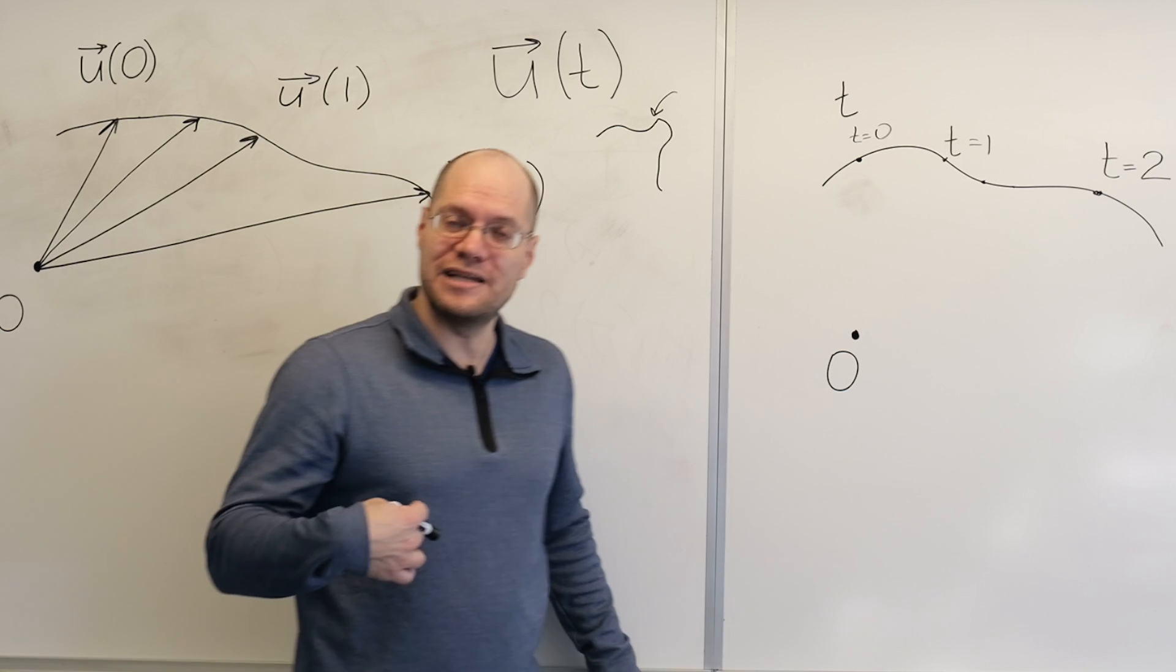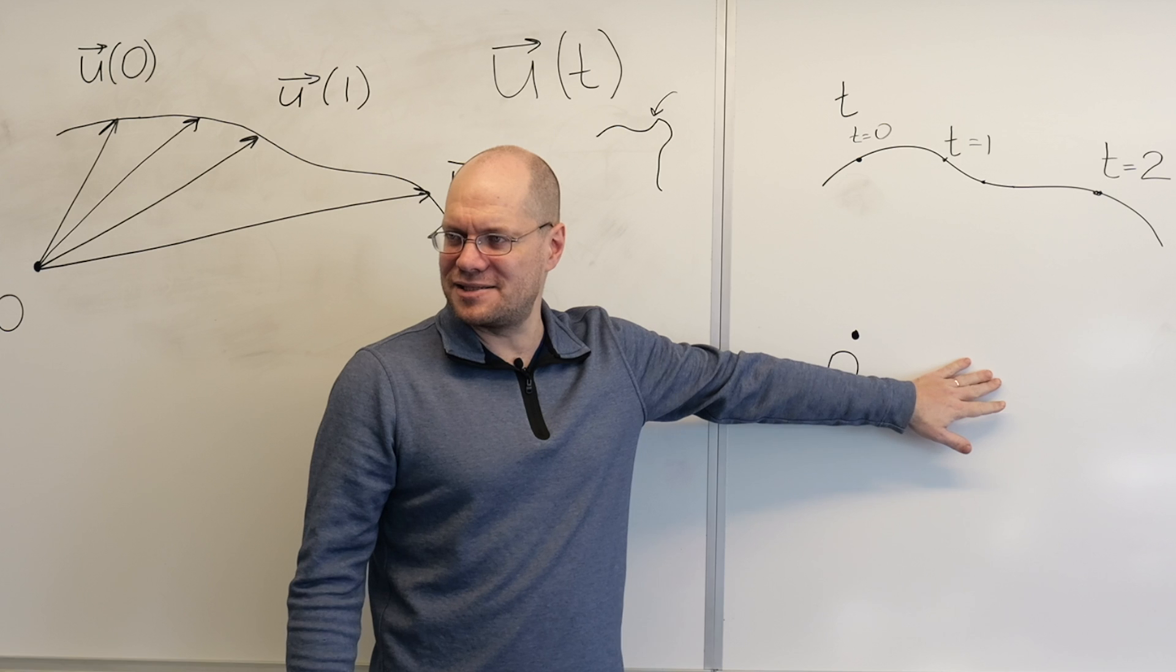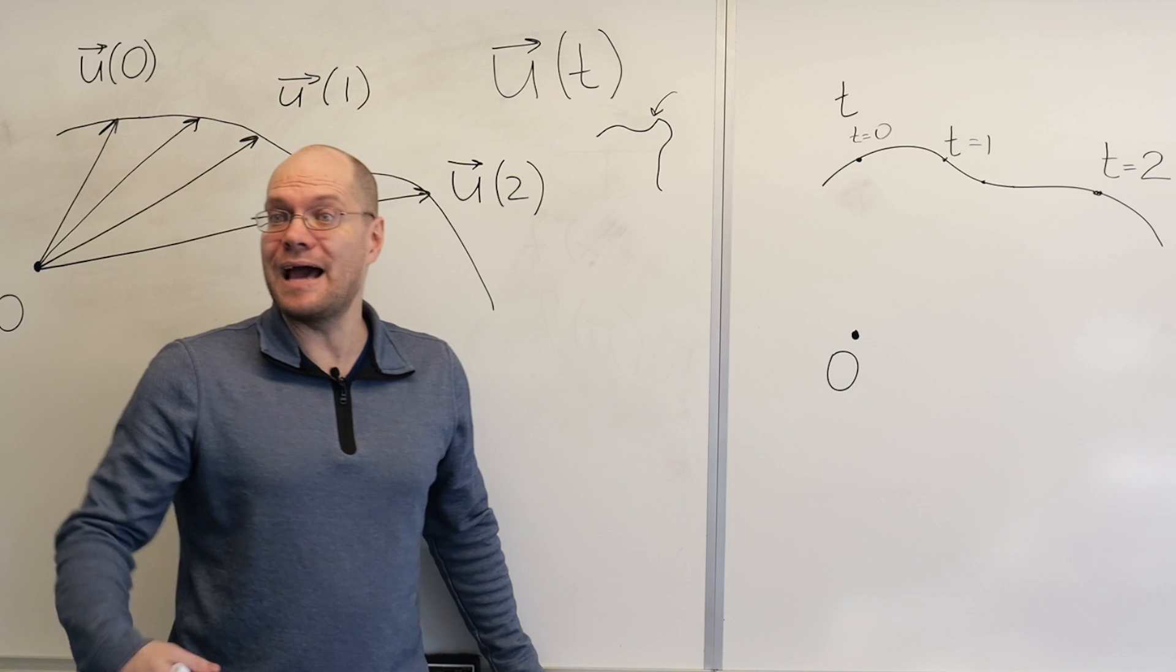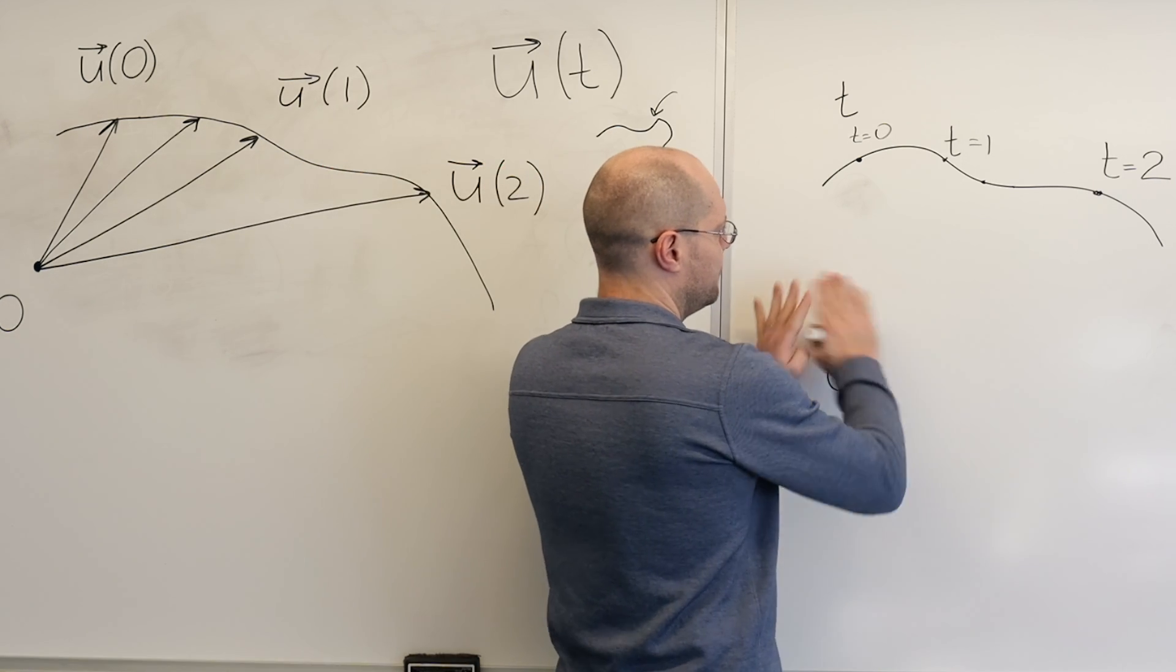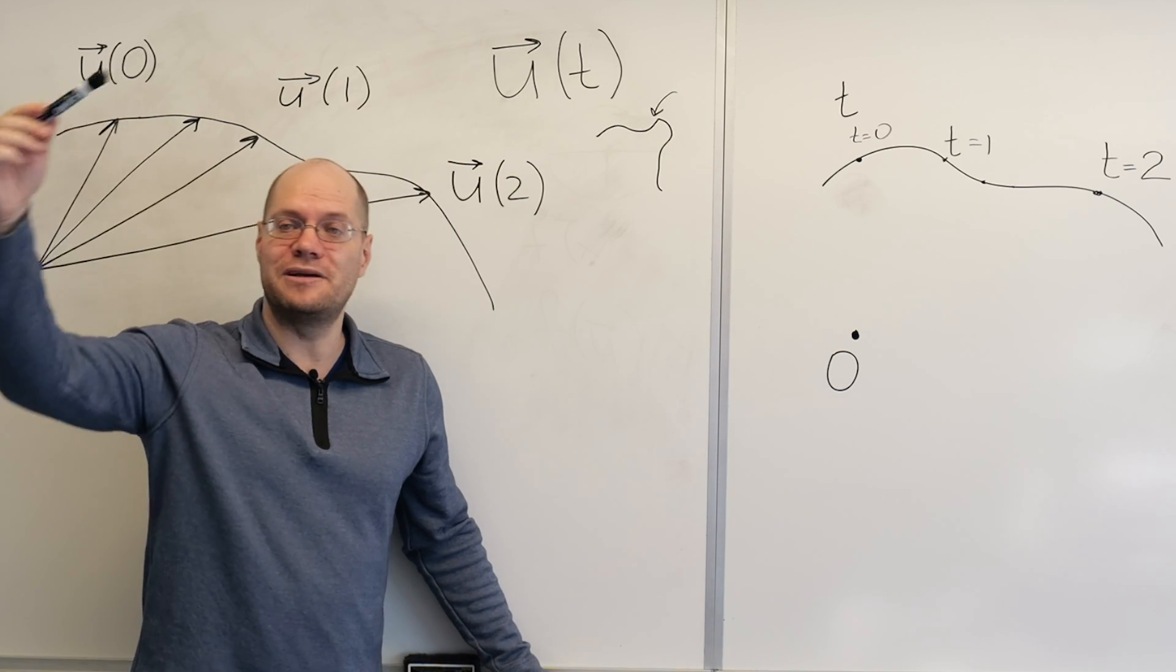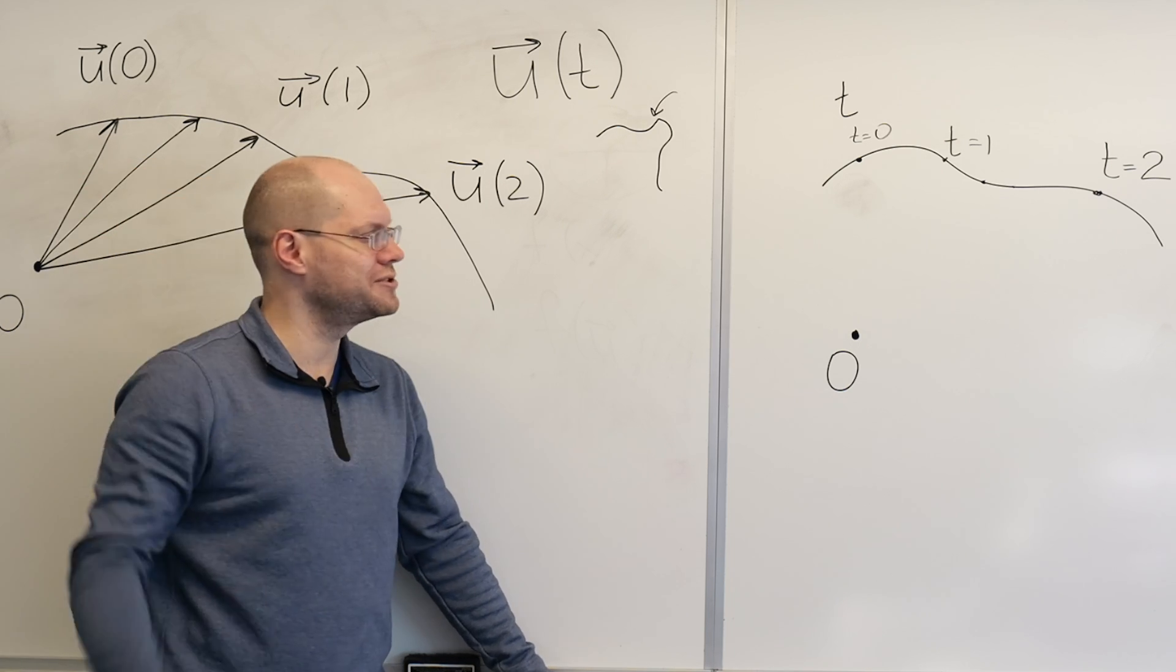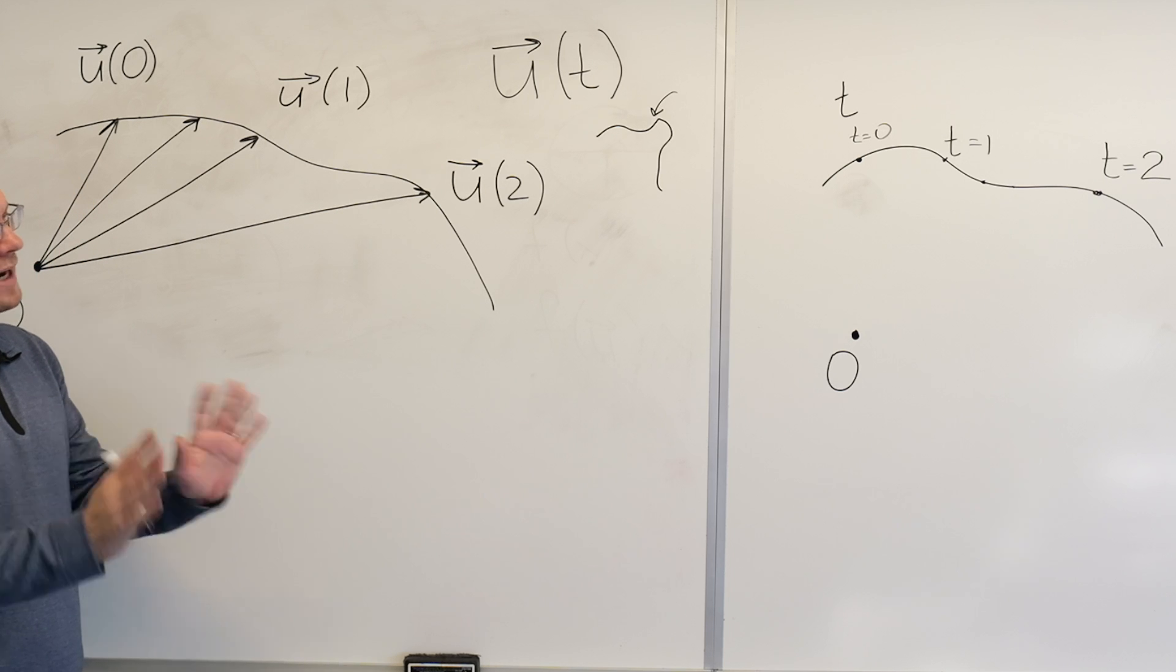However, what there isn't is a coordinate system in the ambient space. That's very important. So the space surrounding the curve is called an ambient space. Here, the ambient space is a plane, the plane of the whiteboard. But we could also consider the three-dimensional space and a curve in three-dimensional space that the tip of my marker is tracing out right now. So you need a parametrization.